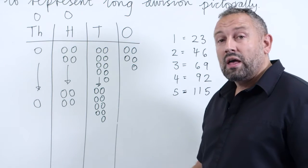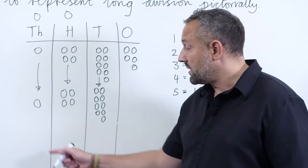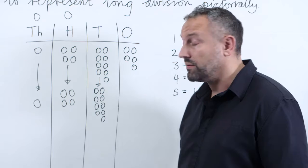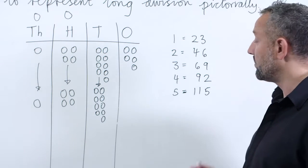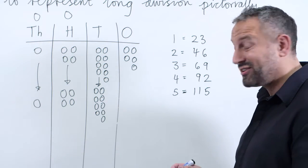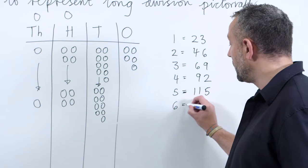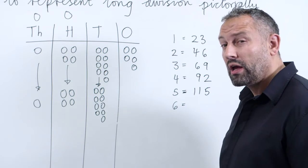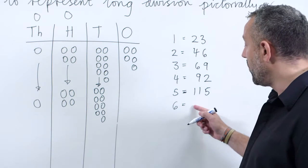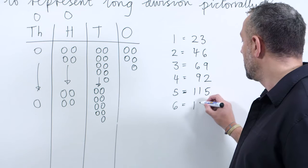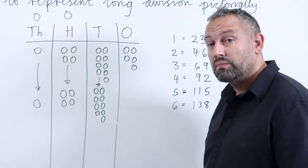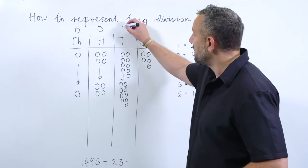So now we can look at how many groups of 23 we can get out of 149. If we refer to our table, we can see that we can make five groups, and we can actually make one group more. Hopefully that's something that you can look at and explore with the children. One more set of 23 will make it 138, so we can remove six sets.